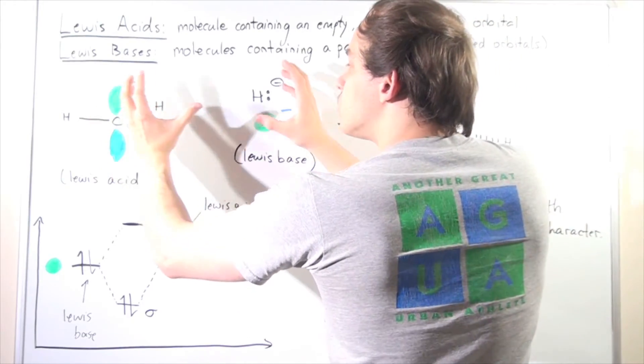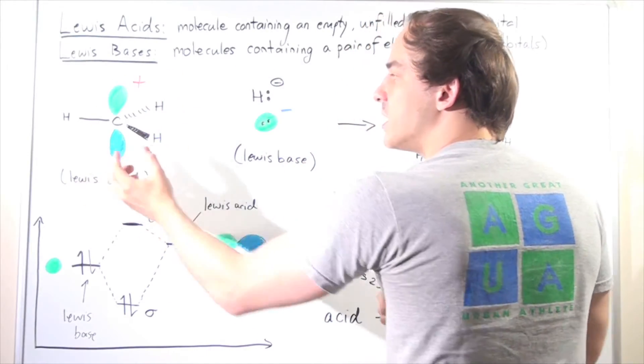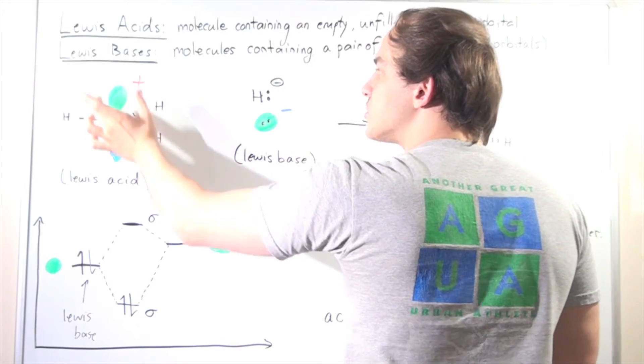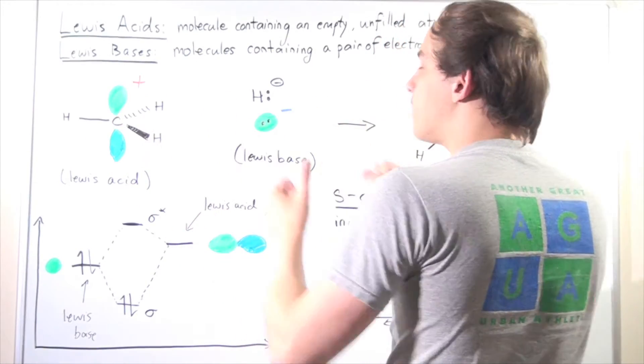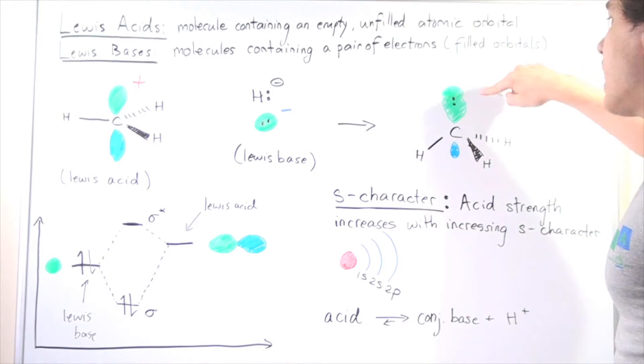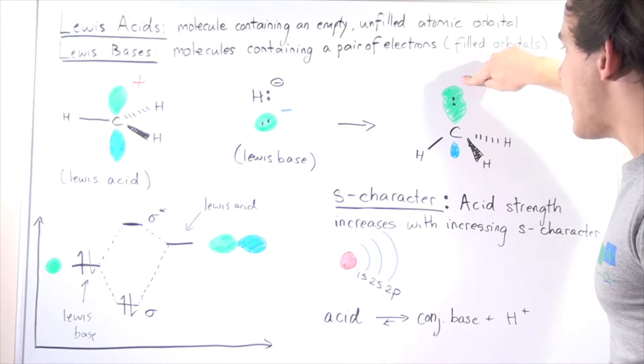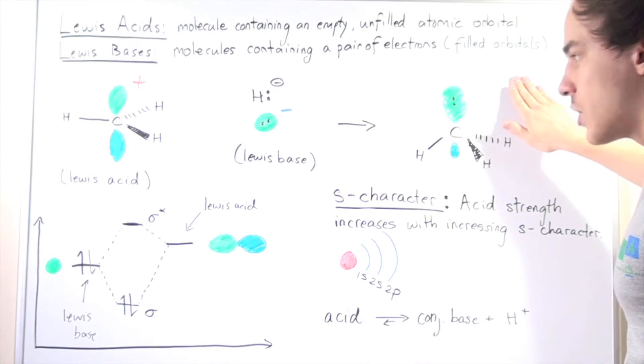As these come closer, this lobe becomes smaller, this becomes larger, so that the overlap is better, and we form sp3 hybridized bonds. So 1, 2, 3, 4 sp3 hybridized bonds, and now this carbon and this H share a pair of electrons.